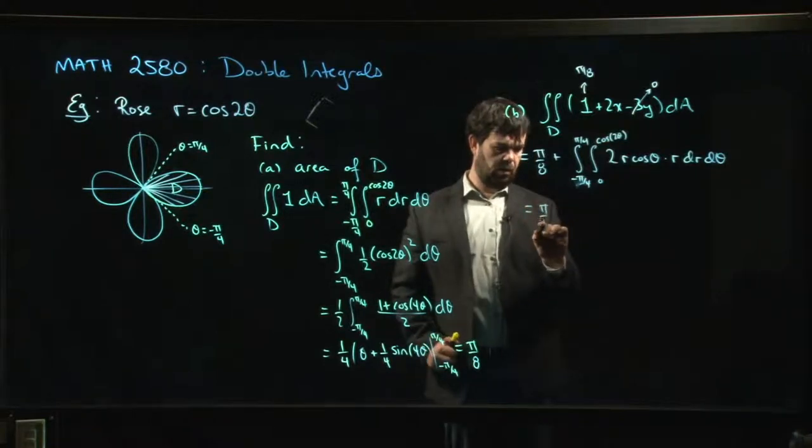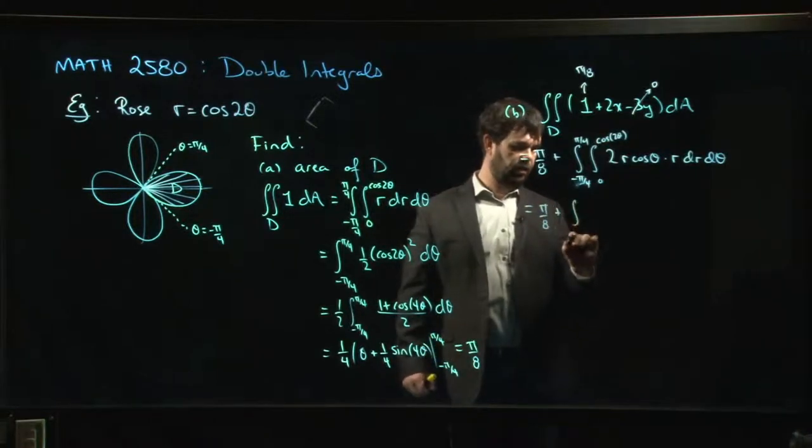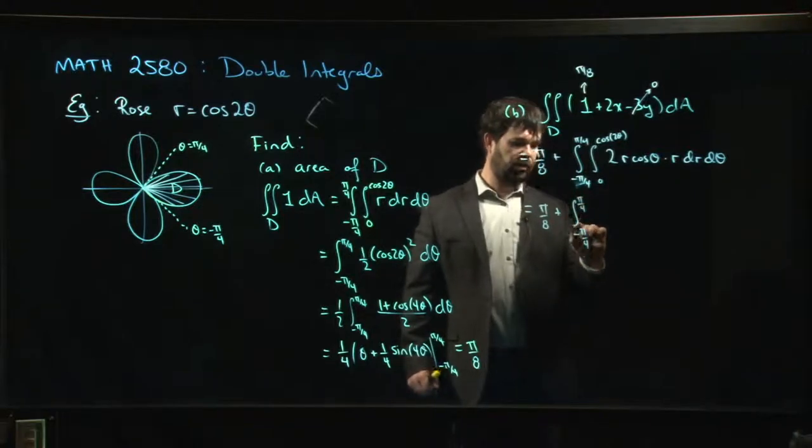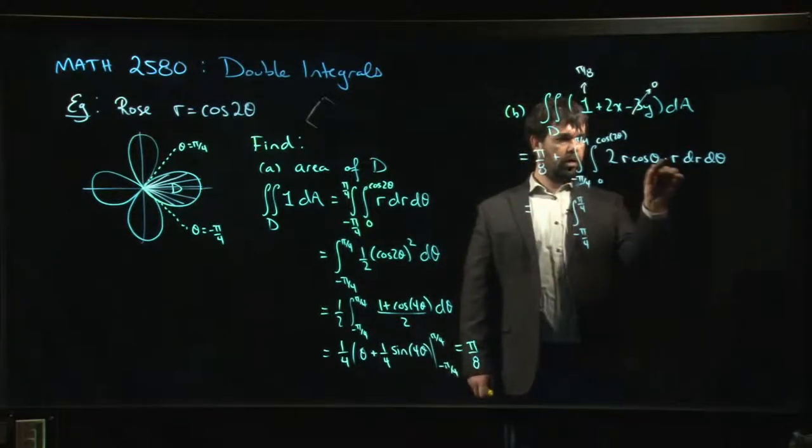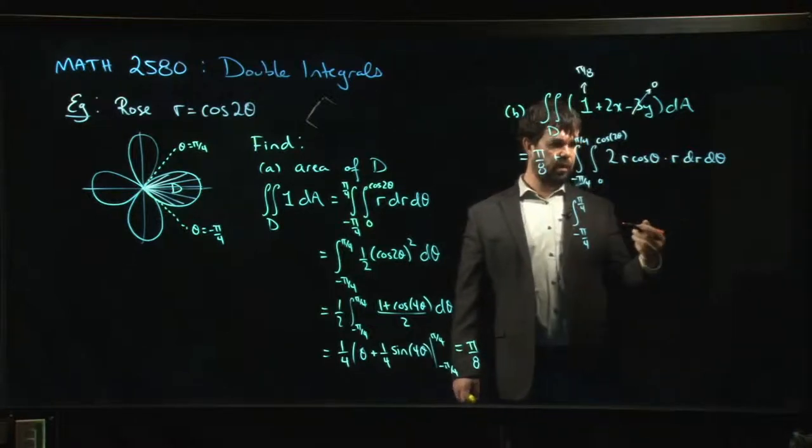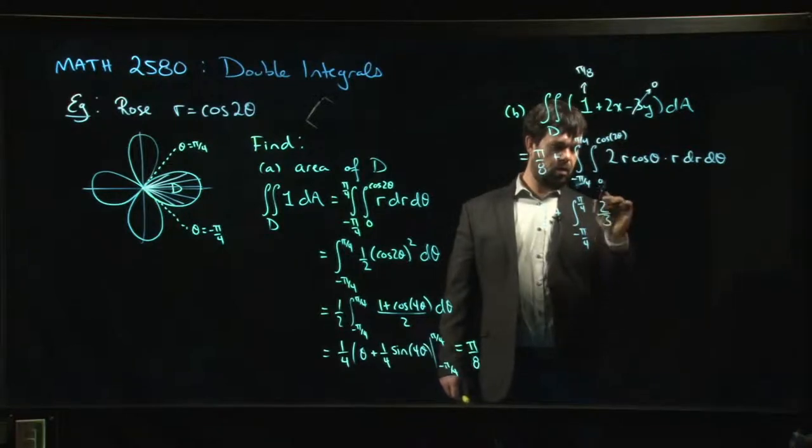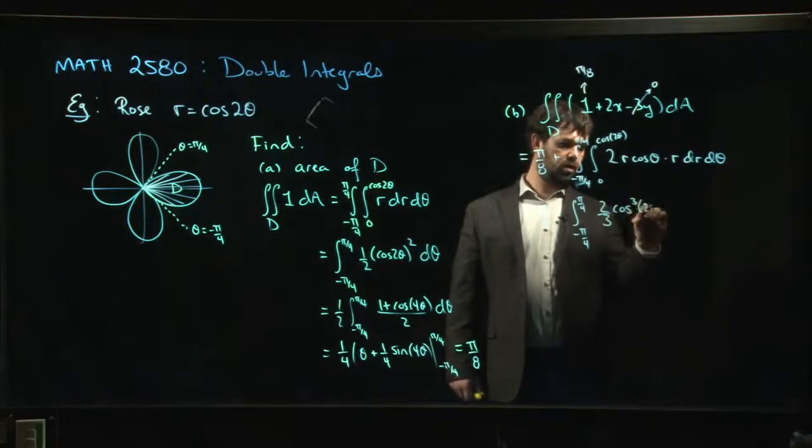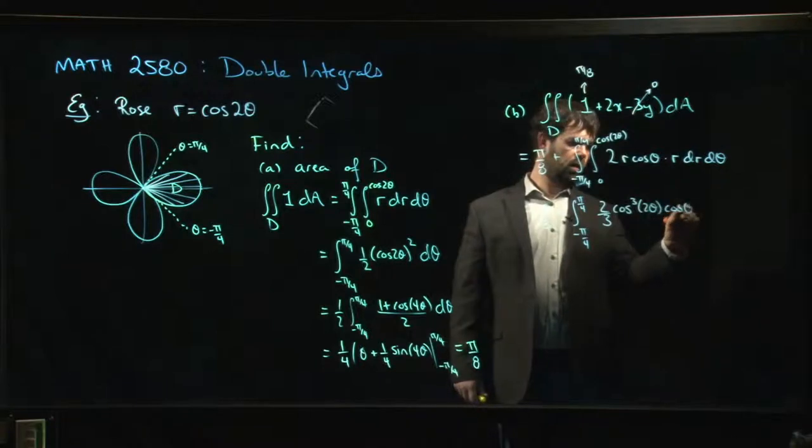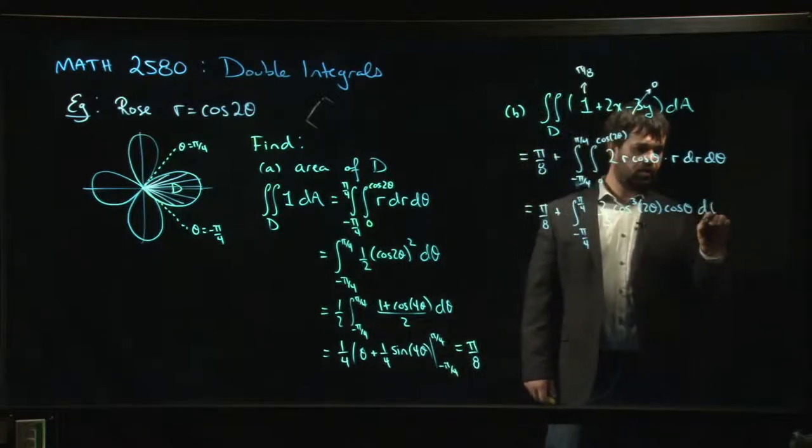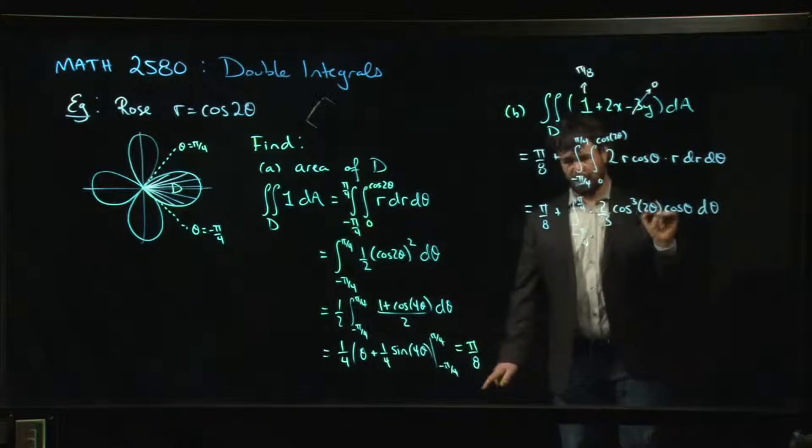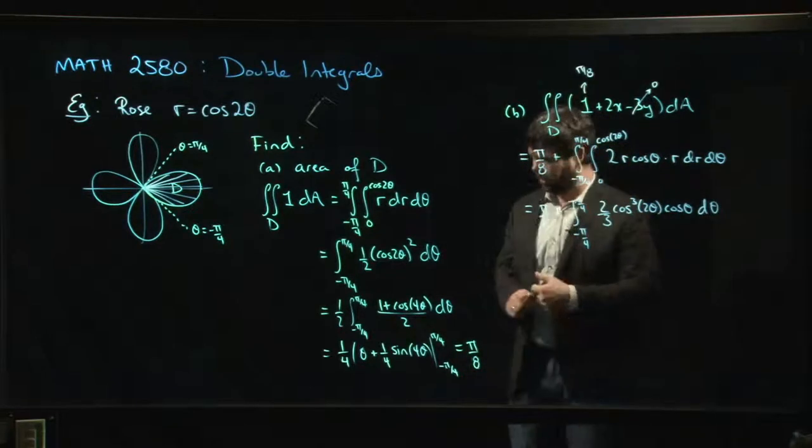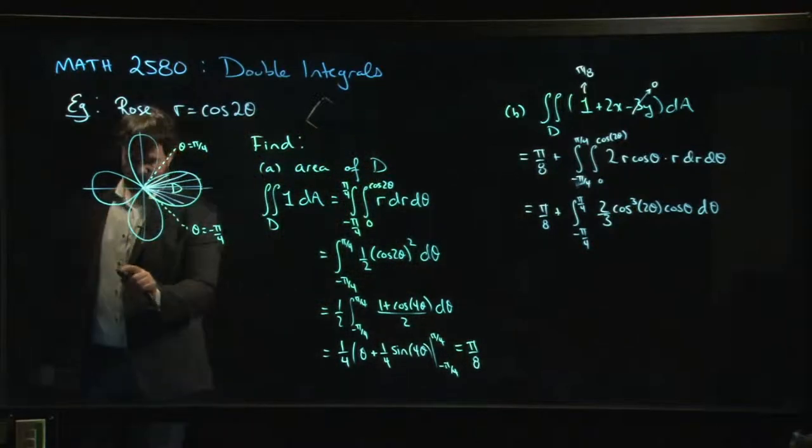All right. So now I might get to a point where I don't really want to finish this example because the integral gets kind of ugly. But let's at least see how we can set things up. And if I don't make it to the end, you can always ask Wolfram Alpha for the final answer. r squared, so 2r squared. The anti-derivative gives me 2/3 r cubed, cos cubed 2 theta.